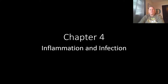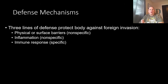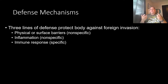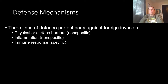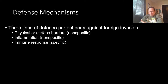Now we're going to focus in on inflammation and infection. Before we get started, let's talk about some defense mechanisms. We have three lines of defense that protect our body against foreign invaders. Our first line of defense is our physical barriers — surface barriers like your skin, your mucous membranes, and also chemicals that make your skin more acidic, your sweat, your tears, your saliva. These are non-specific physical or surface barriers, and we're all born with them, so this is considered innate immunity.